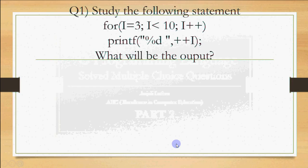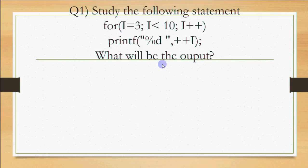Let's start. The first question: study the following statement and tell what will be the output. The statement is for i equals 3, i less than 10, i++ and we are printing %d++i. We have to tell what output is going to happen from the given options. Let's see. i is initially 3. 3 less than 10 is true. It comes here to printf %d++i. This is pre-increment.